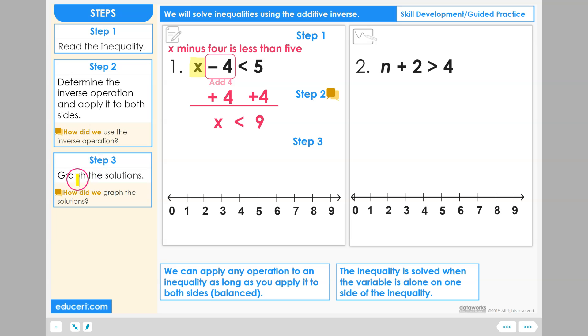Step three. Graph the solutions. Let's read this inequality to understand what all the solutions are. Starting with the variable, we will always read solutions are all values. That's the variable. We now read the inequality sign, less than, and then we read the number, which is also our starting point for our graph, nine.